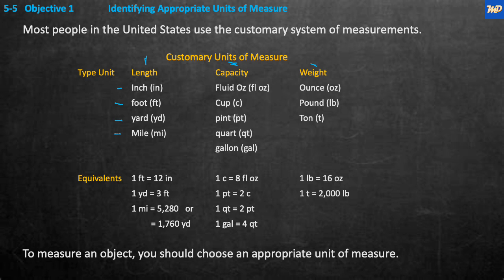When it comes to holding a quantity — capacity — we have fluid ounces, cups, pints, quarts, and gallons. These are all very customary here in the United States. And for weight, we have ounces, pounds, and tons.